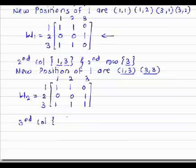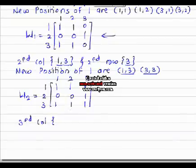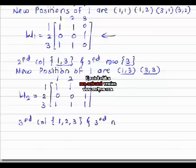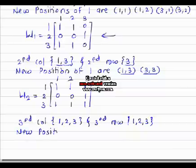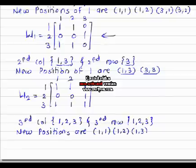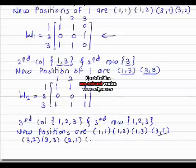In the third column, the positions of 1 are 1, 2, 3. And in the third row, the positions of 1 are 2, 3. So the new positions are (1,1), (1,2), (1,3), (3,1), (3,2), (3,3), (2,1), (2,2), (2,3).